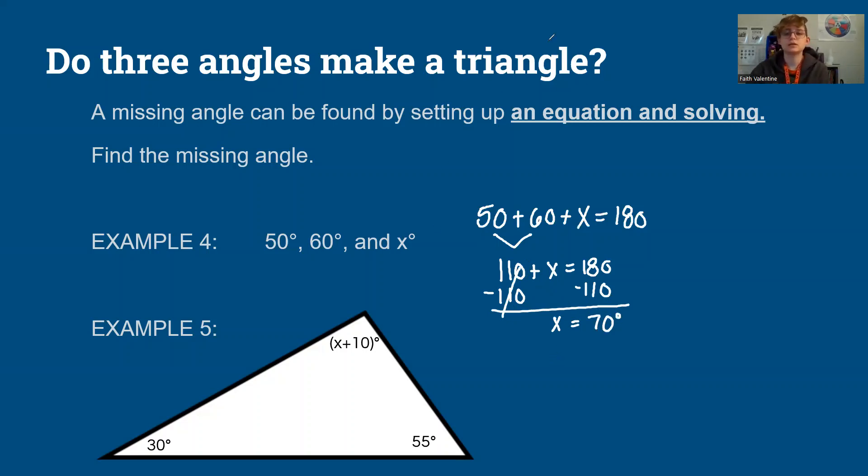And let's look at this triangle right here. I can see one angle measures 30 degrees, one measures 55 degrees, and one measures x plus 10 degrees. Or x plus 10. Together, they measure degrees. And this is 180 in total.